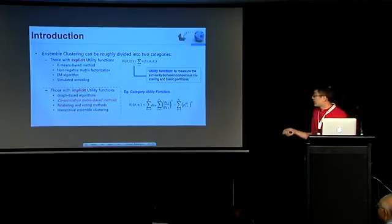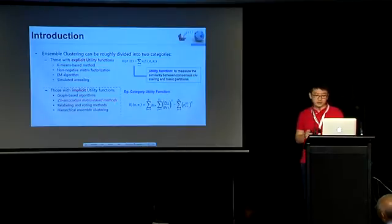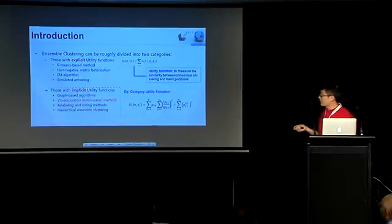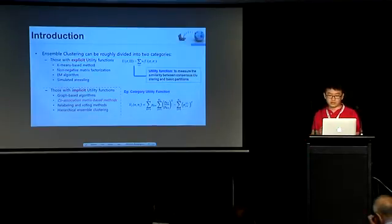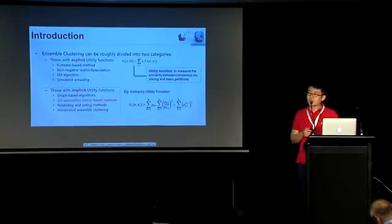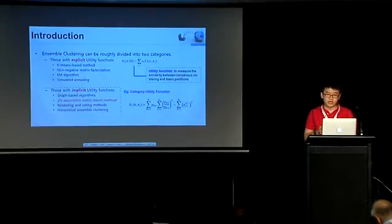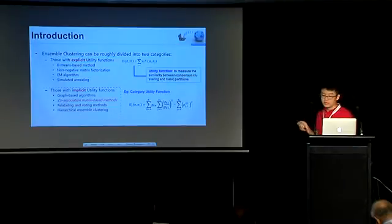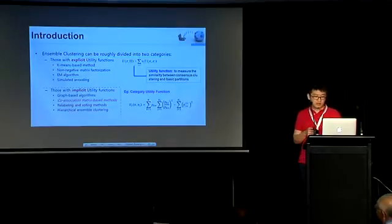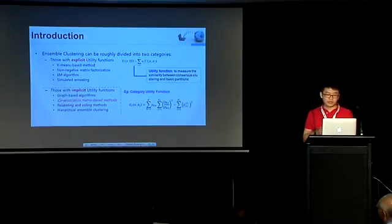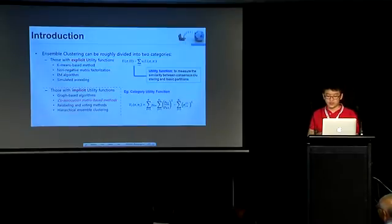And here, this utility function is widely used for the Ensemble Clustering method. It is called the Category Utility Function. According to whether explicit utility functions are used or not, the Ensemble Clustering method can be roughly divided into two categories. The one with explicit utility functions, including k-means and non-negative matrix factorization, and those without explicit utility functions are the graph-based algorithms, co-association matrix-based algorithms. And in this paper, we focus on the co-association matrix-based method.